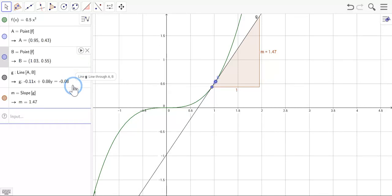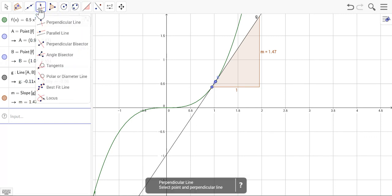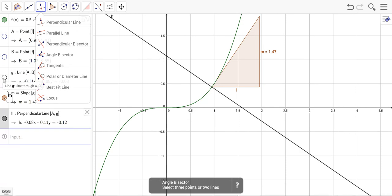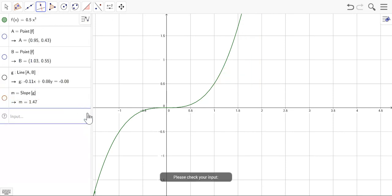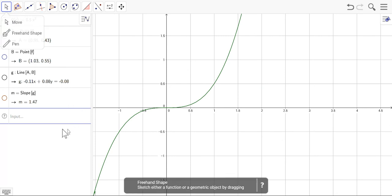Now, GeoGebra does have a way to graph the tangent line very easily for you. There is an option up here in the perpendicular line tool. There's a tangent line. You can also type it in as a command, which we can do now. I'm just going to go ahead and hide some of these points. We don't need this stuff right now.